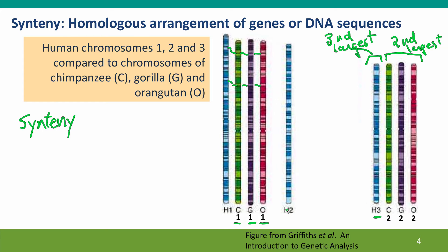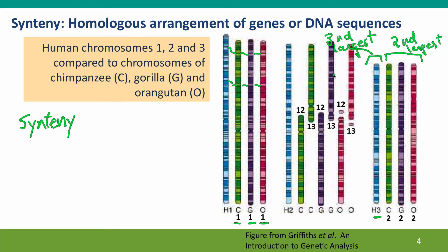Our chromosome two — what's it homologous to? It shows very strong synteny and sequence homology to chromosomes 12 and 13 of chimpanzees, gorillas, and orangutans. The long arm of our chromosome two is homologous to chimpanzee chromosome 12, gorilla chromosome 12, and orangutan chromosome 12. The short arm is homologous to their chromosomes 13. So their 12th and 13th longest chromosomes together are homologous to our second biggest chromosome.